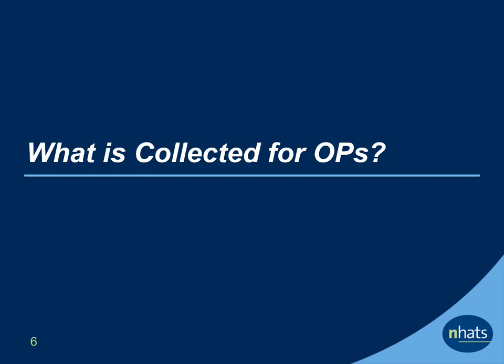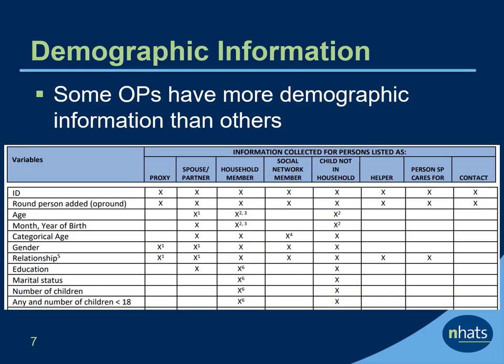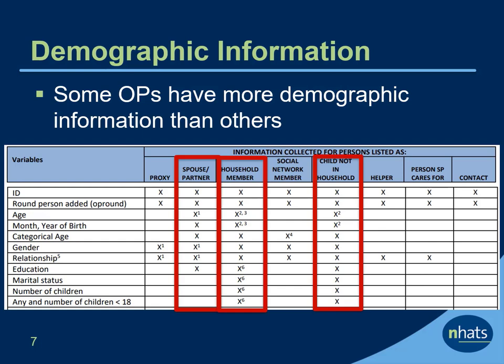What is collected for OPs? Demographic information about an OP depends on the reason they were added to the roster. For spouses or partners, for example, NHATS collects age, gender, relationship to the sample person, and education. In contrast, for children and household members, NHATS also collects marital status, number of children, and whether any children are less than age 18.